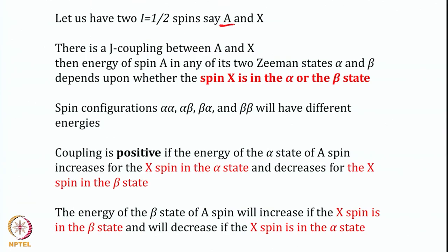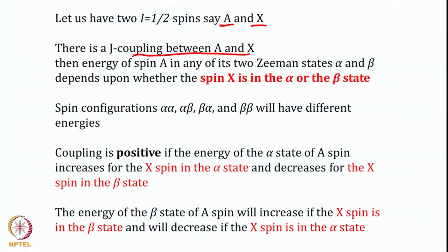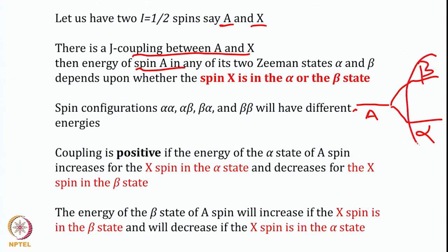Let us define two spins A and X. If these two spins are close by and connected by a bond, there is a coupling between them called J coupling. Now spin A has two Zeeman states — the alpha state and the beta state. This state depends upon whether the X spin is in the alpha state or the beta state, and that affects the resonance frequency. This coupling can be positive.